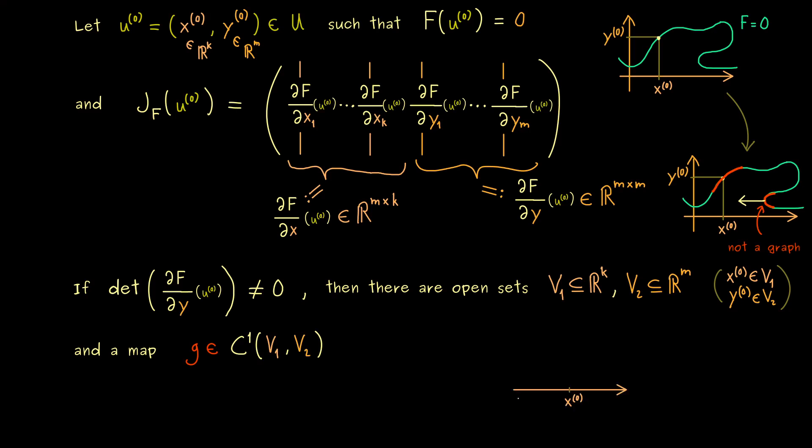So again, let's simply take our two-dimensional picture here. And please don't forget, in general, the x-axis describes k variables and the y-axis describes m variables. Hence, the graph we are interested in is a subset in R^n. And now we know everything works locally. So we have our set V_1 here and the set V_2 there. And then as we have said before, the graph of the function g we find here. So even in higher dimensions we could say this is the graph of g.